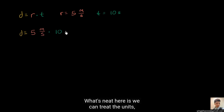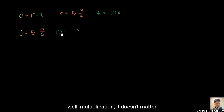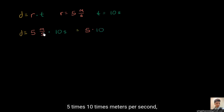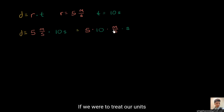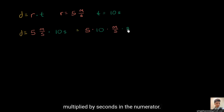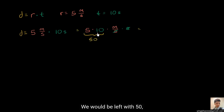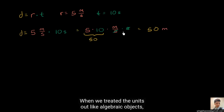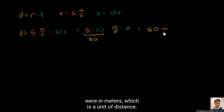And what's neat here is we can treat the units like algebraic constructs, kind of like variables. So this would be equal to — well, multiplication doesn't matter what order we multiply in, so we can change the order. This is the same thing as five times 10, times meters per second, times seconds. And if we treat our units as algebraic objects, we have seconds divided by seconds — seconds in the denominator multiplied by seconds in the numerator — those are going to cancel out. And five times 10 is 50. So we would be left with 50, and the units we're left with are meters: 50 meters. The units worked out. When we treated the units like algebraic objects, they worked out so that our end units for distance were in meters, which is a unit of distance.